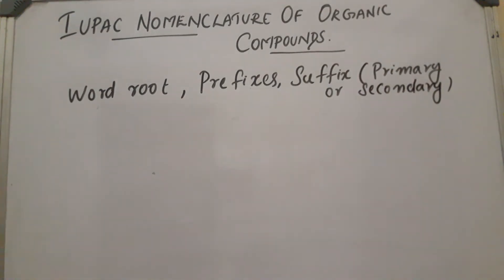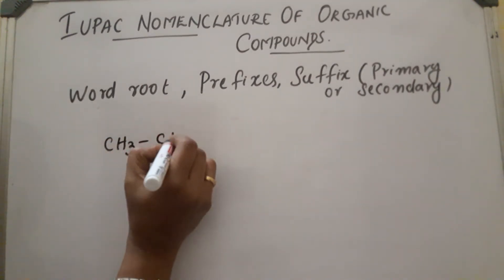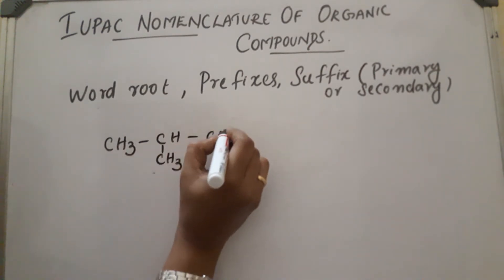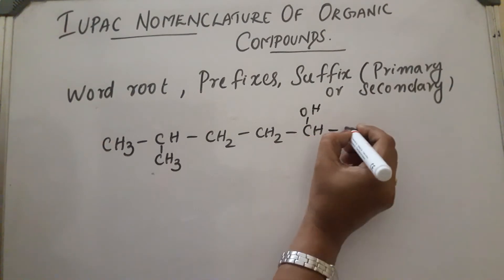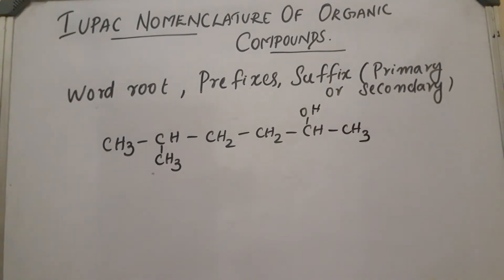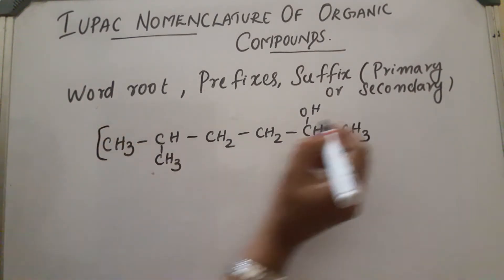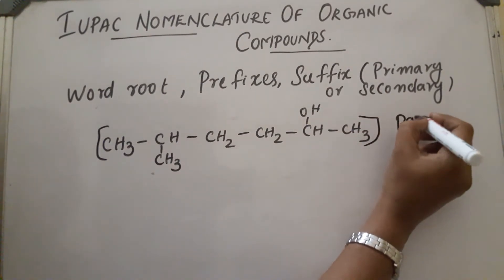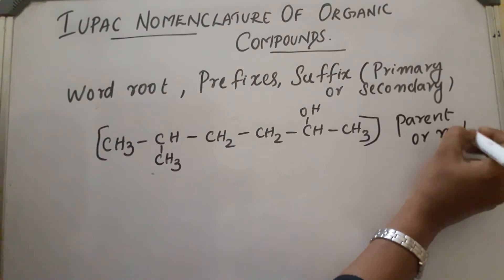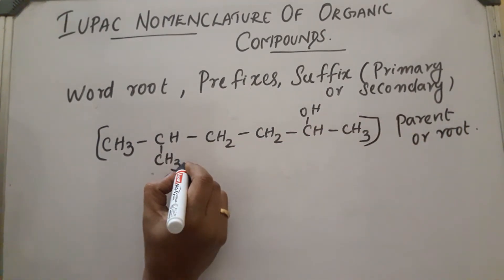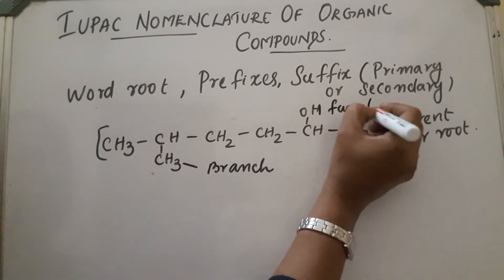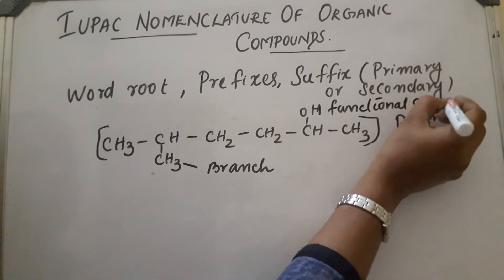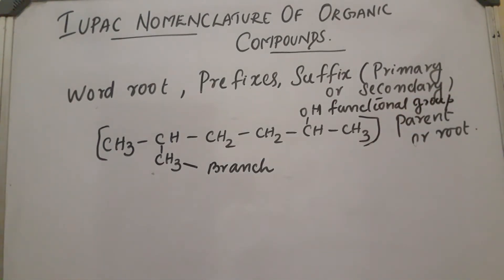Let us consider a compound CH3–CH with a branch and an OH group. The longest chain is called the parent chain or root. The side chain is called the branch of this compound, and OH is the functional group.